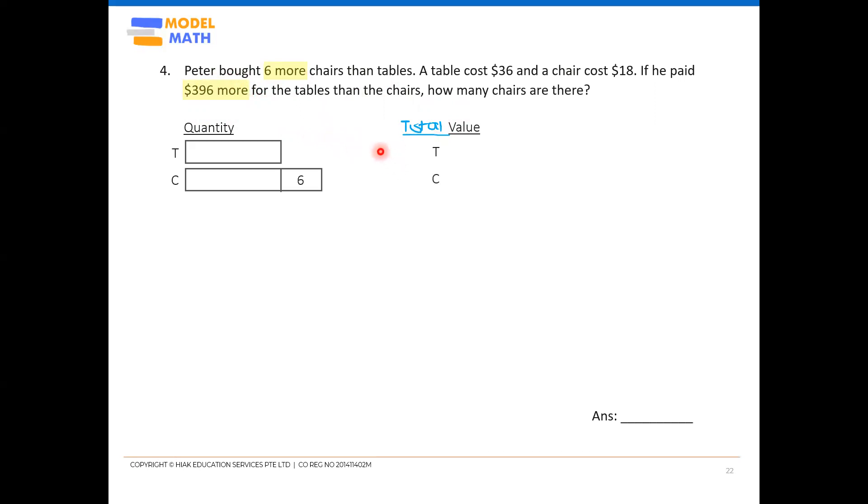So total, sorry, tables versus chairs. So I got to use this $396 to create my model. So tables will be more expensive by $396. Okay, so the difference, usually I'll write it above here because I may need to prepare to cut from the model or something. All right. Okay, so I have two kinds of differences. I finished recording my data. I have a quantity difference as well as a value difference here.